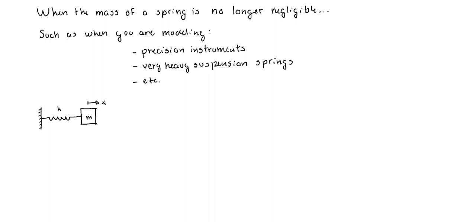If we consider the kinetic energy of the system, the real answer is that the kinetic energy of the system is equal to the kinetic energy of the spring plus the kinetic energy of the block. Probably what you've been doing is setting the kinetic energy of the spring equal to zero. That's a fair assumption, but the condition is that the mass of the spring is much, much smaller than the mass of the rest.